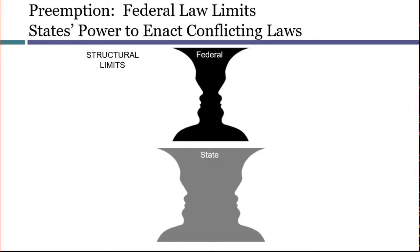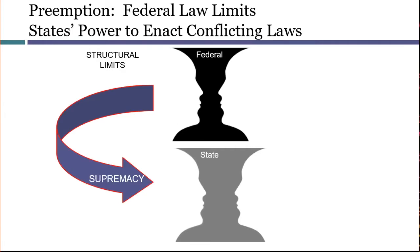Preemption is a modern term for a pretty old idea: any state law that unduly conflicts with a federal law will be invalid as a result of the Supremacy Clause. The Supremacy Clause is a structural limit on state power. Structural limits typically decide who decides. So if Congress has acted in a permissible area, then Congress gets to decide, and not state or local governments.